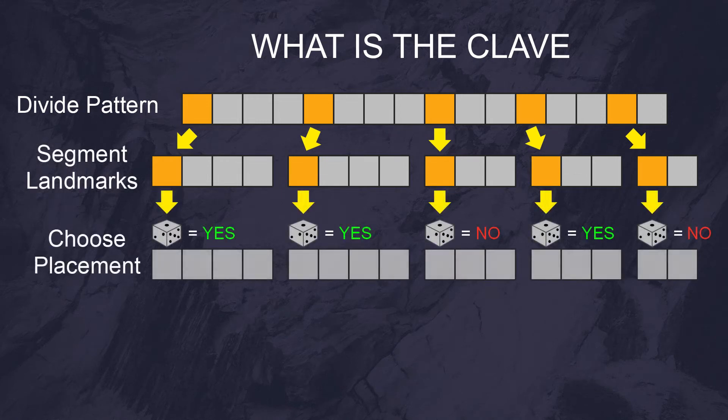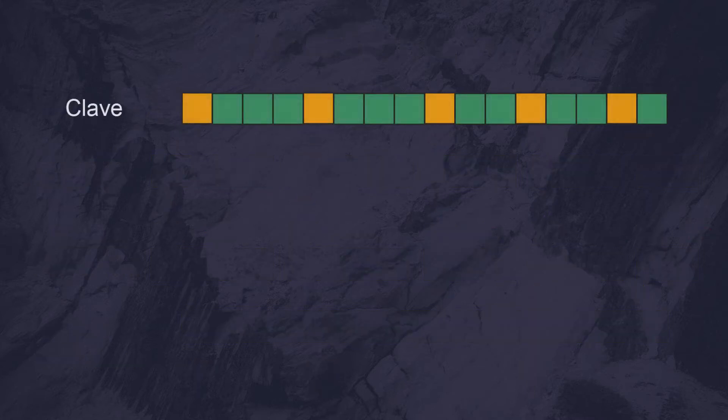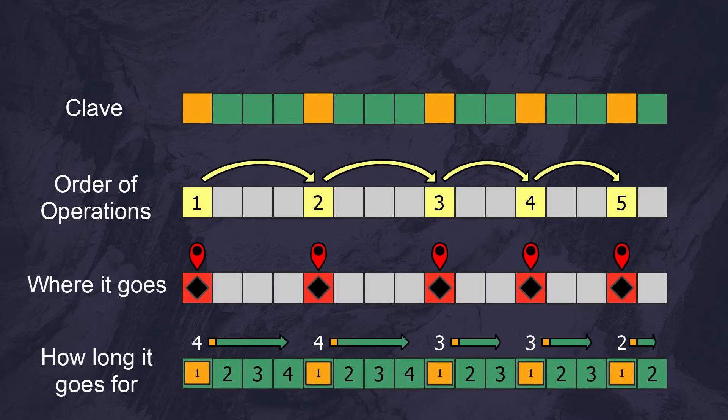The first beat of each segment is used as a landmark for where we might place a rhythmic event. We can choose whether to place a beat or not using a generative operation. And if we do, we send it to an instrument to play. The clave is our structure and gives us a lot of important information. It tells us the order of operations, where everything goes, and how long it goes for.